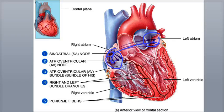Another analogy for the conduction system is like a series of dominoes. When you knock over the first domino, all the others will fall over. Think of the SA node as the first domino in the series that is knocked over, which triggers the knocking over of the remaining dominoes — representing the remaining components of the conduction system.